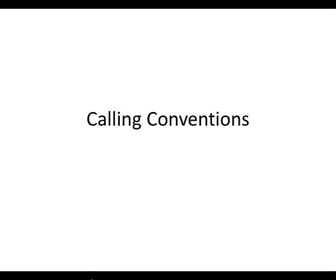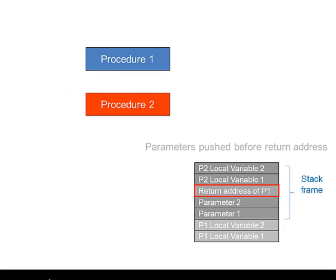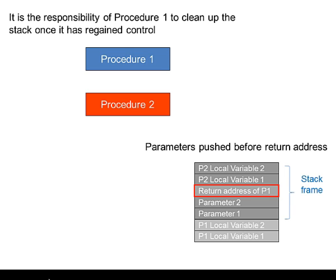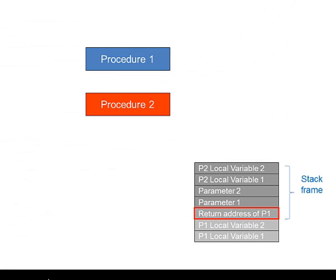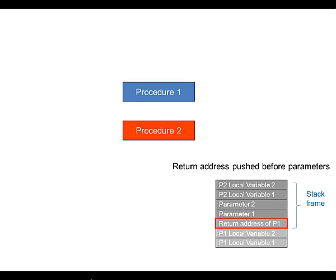In the scheme we've just described, Procedure 2's parameters are pushed onto the stack before the return address of Procedure 1 is pushed onto the stack, and hence it's the responsibility of the calling procedure to clean up the stack once it's regained control. In some literature you will see that the return address is pushed onto the stack first, before the parameters. The way this actually works depends very much on the machine architecture and the machine language.